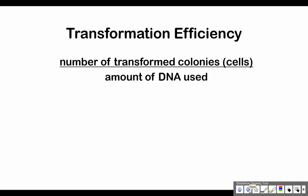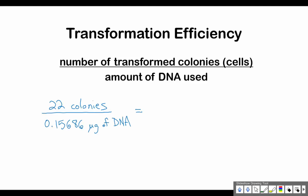To calculate transformation efficiency, we just need the number of transformed colonies. Each colony descended from a single bacterial cell, so the number of transformed colonies equals the number of transformed cells that took up the new plasmid DNA. We count the colonies glowing fluorescent green under UV light and divide by the amount of DNA used. For example, if we had 22 colonies and divide by 0.15686 micrograms of DNA, we get a transformation efficiency of 140 transformants per microgram of DNA.